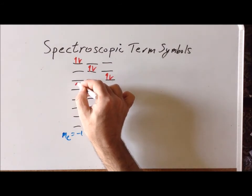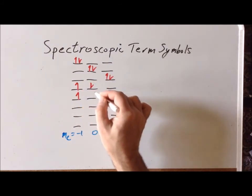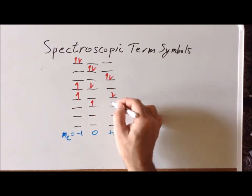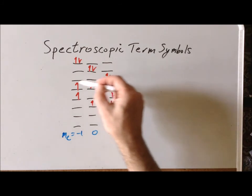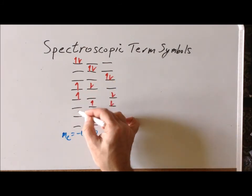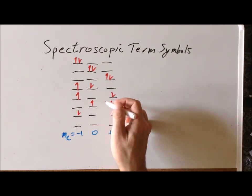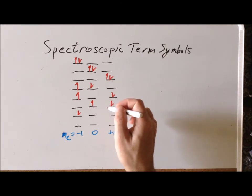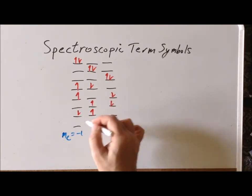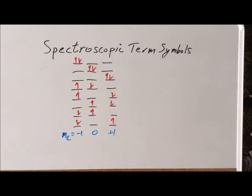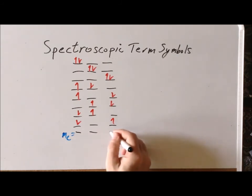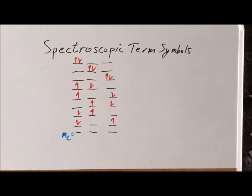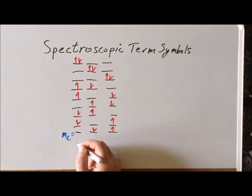We can also have situations where the electrons are in opposite orbitals with one up and one down — three arrangements. Then we look at the same three orbital combinations but with the spins switched (one down, one up), giving another three microstates. That accounts for all nine remaining microstates needed.